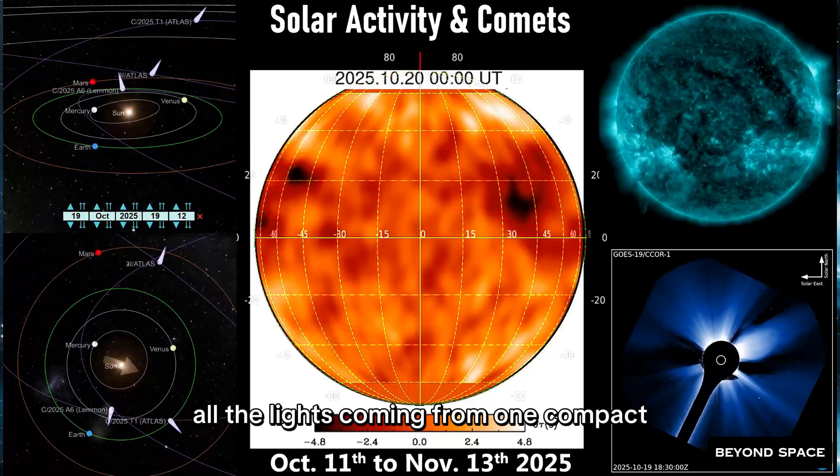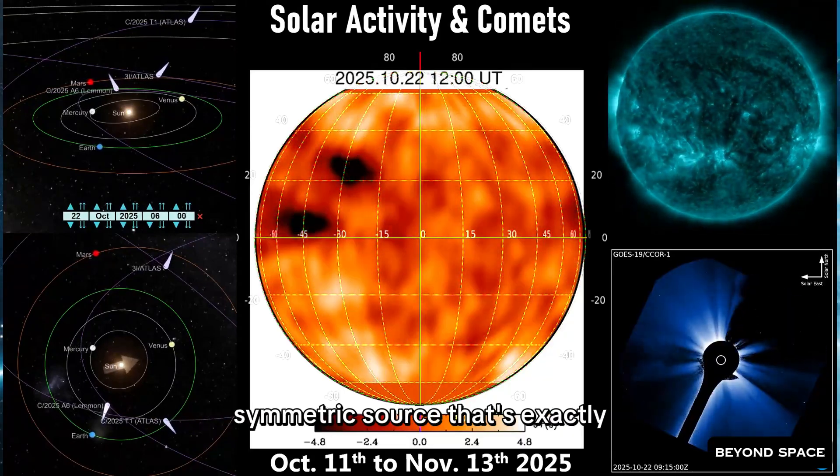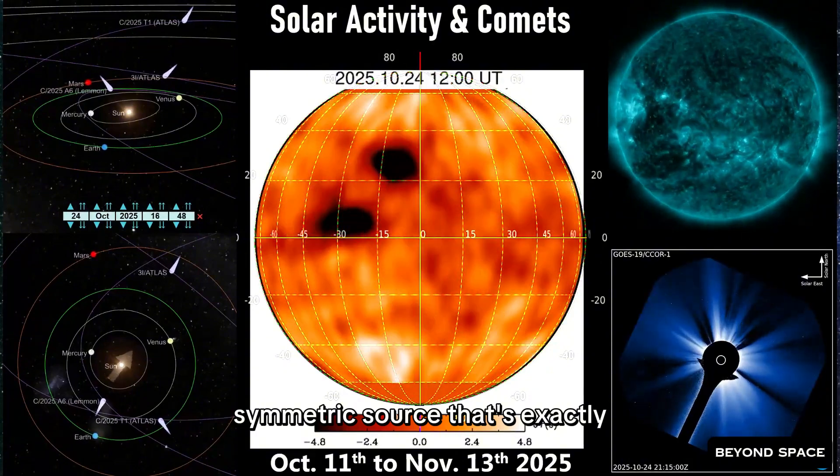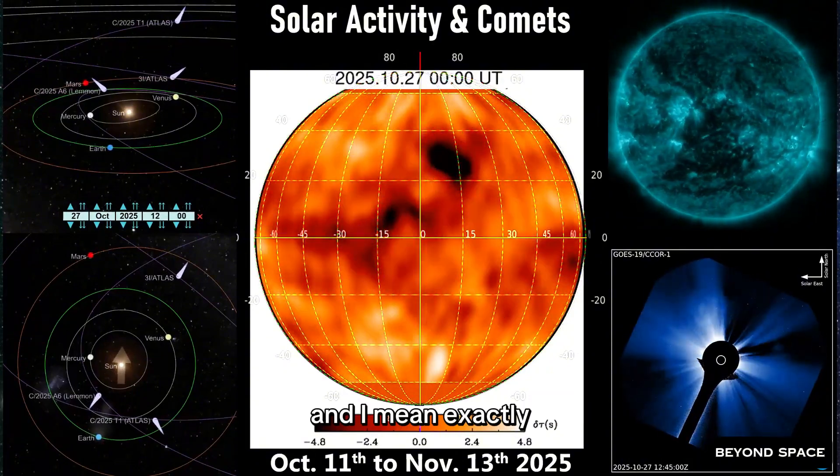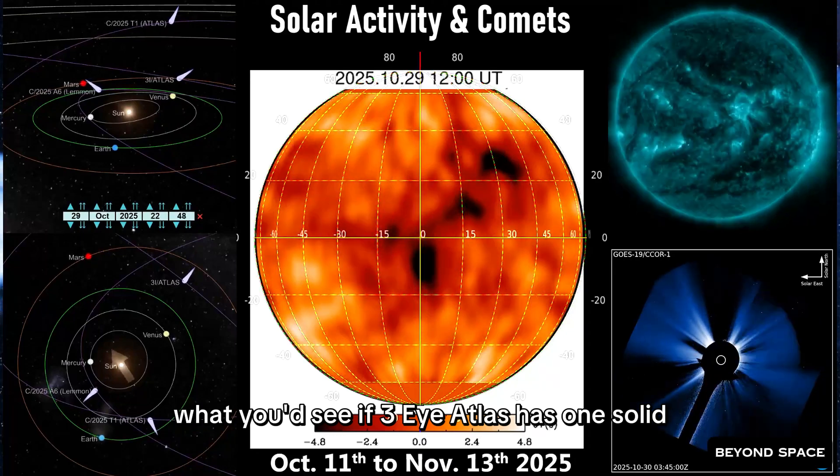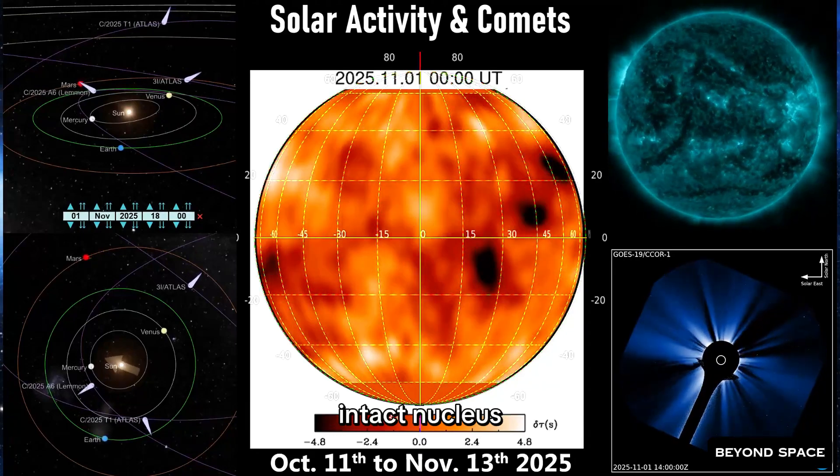What does that mean? All the light's coming from one compact, symmetric source. That's exactly, and I mean exactly, what you'd see if 3I Atlas has one solid, intact nucleus.